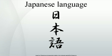Verbs are conjugated primarily for tense and voice, but not person. Japanese equivalents of adjectives are also conjugated. Japanese has a complex system of honorifics with verb forms and vocabulary to indicate the relative status of the speaker, the listener, and persons mentioned.